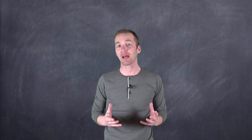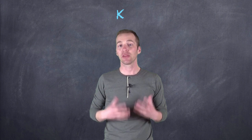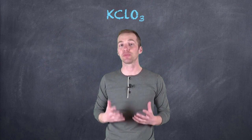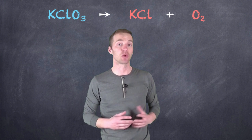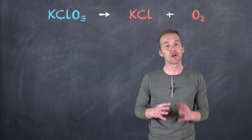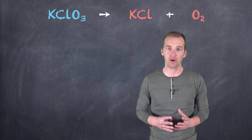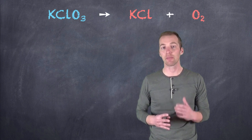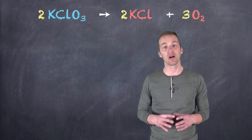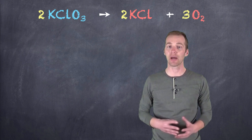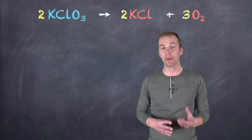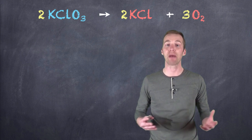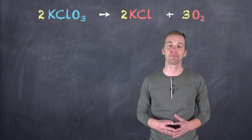To introduce stoichiometry, we're going to take a look at a balanced chemical equation. The reaction we're going to look at is the one in which potassium chlorate decomposes into potassium chloride and oxygen gas. Notice there are a whole bunch of numbers involved in this chemical reaction — not only the numbers of atoms that exist in each compound or molecule, but also the number of compounds and molecules themselves in order to balance out that chemical equation.